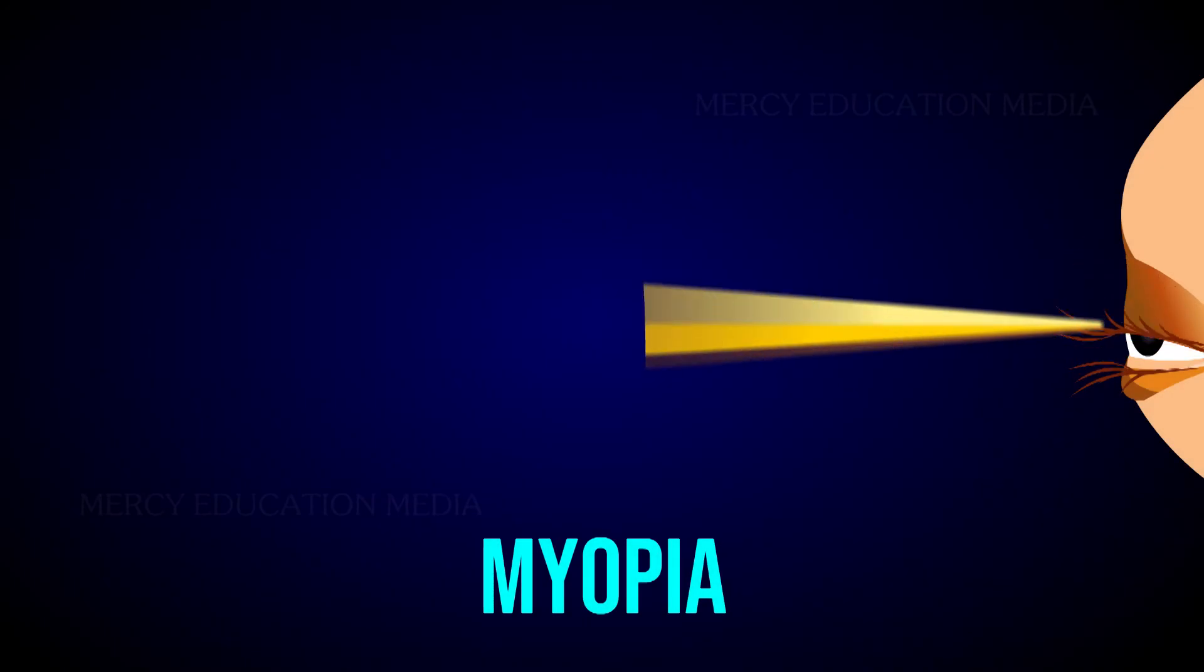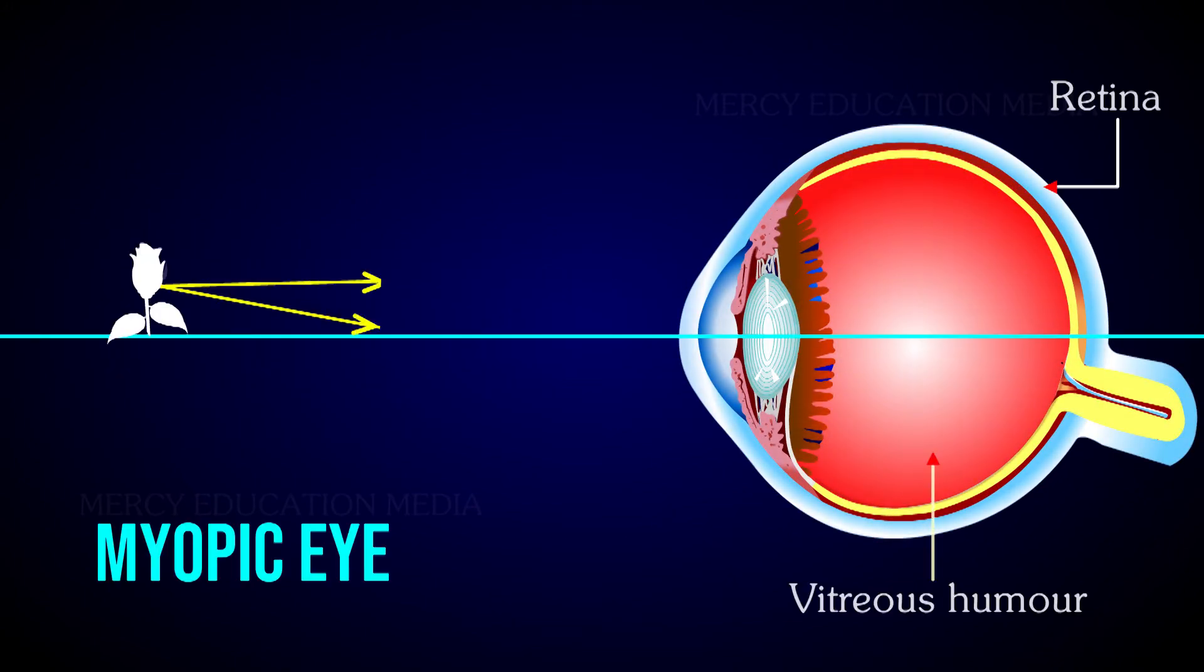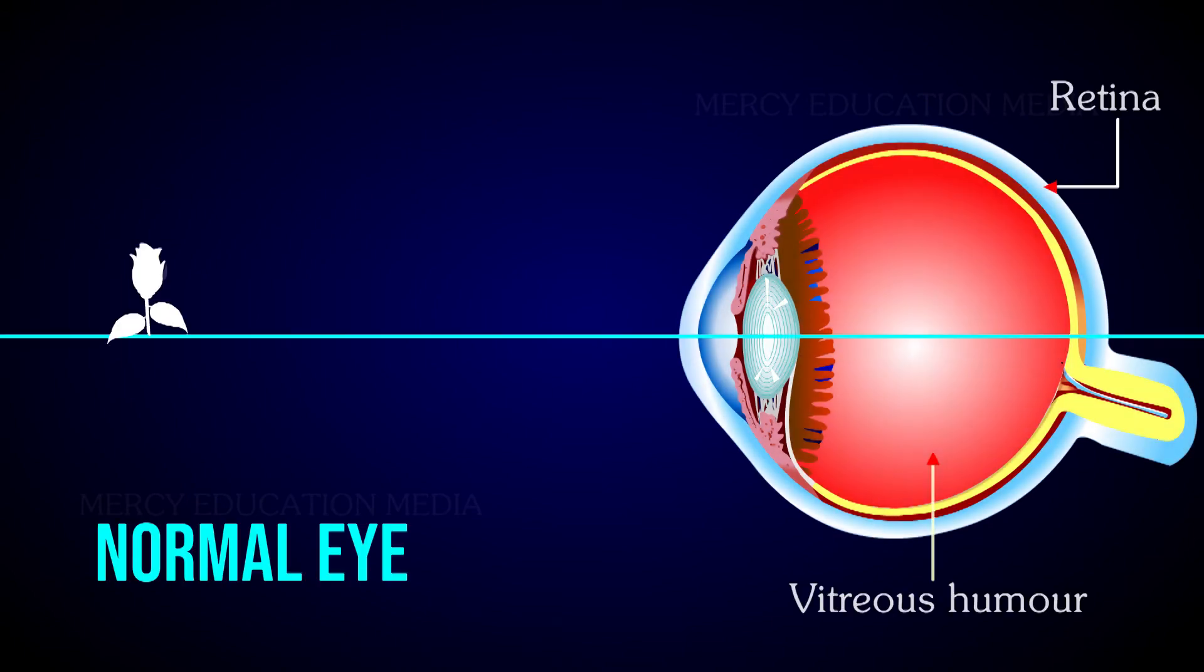Myopia is an eye defect due to which the eye is not able to see distant objects clearly. This occurs when the light rays entering the eye converge in front of the retina in the vitreous body. Here you can see the formation of the image in a normal eye and in a myopic eye.